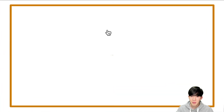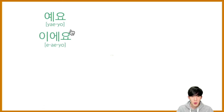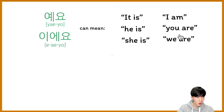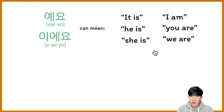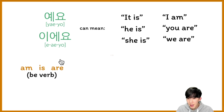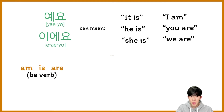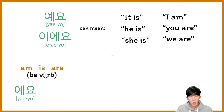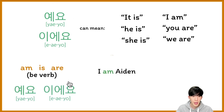예요 and 이예요 — 뭐예요? 예요 and 이예요 can mean it is, he is, she is, I am, you are, we are. How is that possible? So from now on, in English, if there is M is A — we call it the be verb, right? — M is A, then we need to put 예요 or 이예요 at the end. So for example,